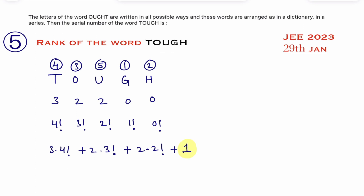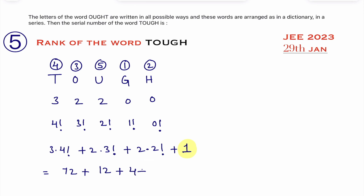Now simplify: 4! = 24, and 24 × 3 = 72. Then 3! = 6, and 2 × 6 = 12. Then 2 × 2! = 4. Adding all these: 72 + 12 + 4 + 1 = 89. So the rank of the word TOUGH is 89.